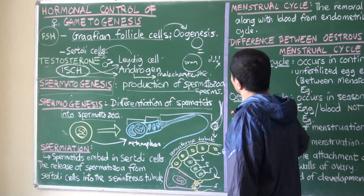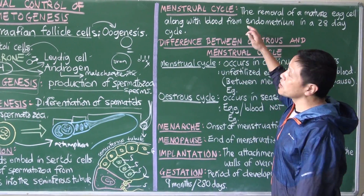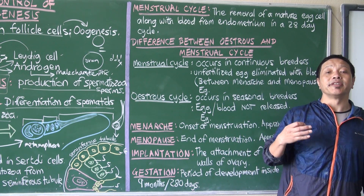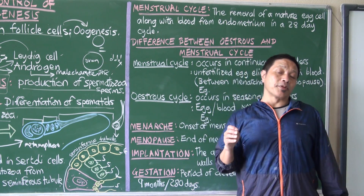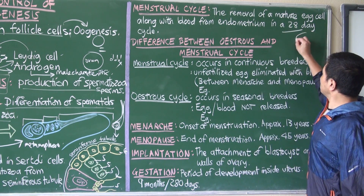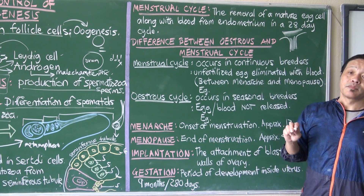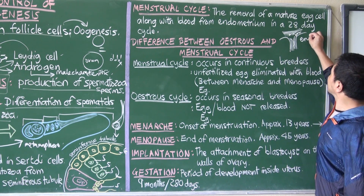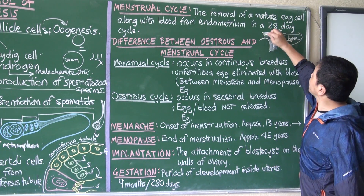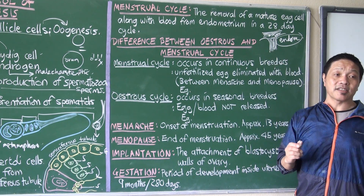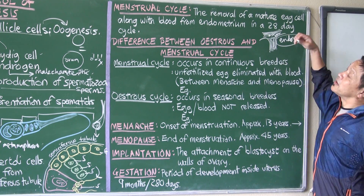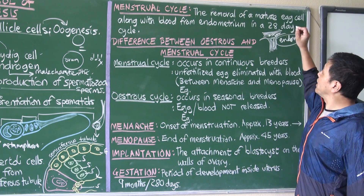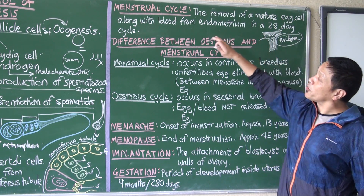Next we move on to the menstrual cycle. This is a 28-day cycle. Women produce one egg, mature it, and it travels through the female reproductive tract. The uterus prepares to receive a fertilized egg — this part is known as the endometrium. If the egg is not fertilized, the endometrium along with the egg is eliminated from the body along with blood. This process of getting rid of the unfertilized egg in the 28-day cycle is known as the menstrual cycle.